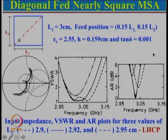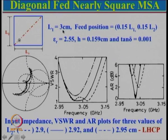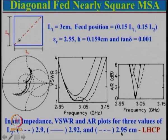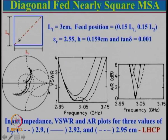We also looked at the effect of the length L2. With a fixed L1 of 3 centimeters and feed position along the diagonal, since the substrate height h is relatively small, the bandwidth is narrower and we took three values relatively close to L1: 2.9, 2.92, and 2.95. For L2=2.9 there is a small loop; for 2.92 that loop is reduced to a kink; for 2.95 there is just a slight bend. If L2 becomes 3, the patch becomes square and there will be no kink or bend.